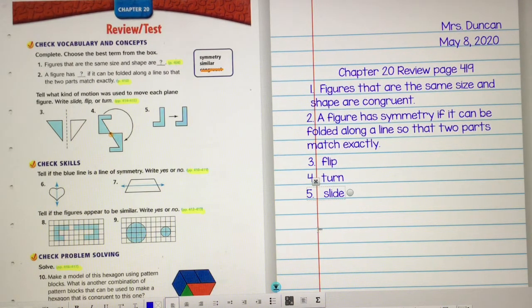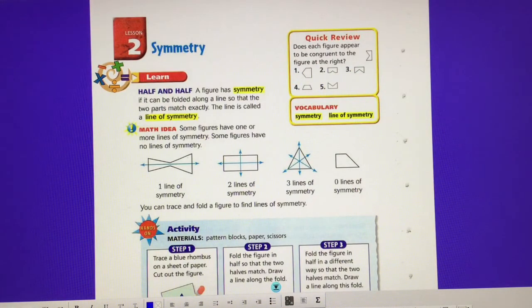Okay, then for six and seven, we're going to talk about if the blue line is a line of symmetry. We're going to write yes or no. So remember a line of symmetry, we're going to go back to page 410. Line of symmetry is where it can be folded along a line so that the two parts match exactly. So here on this first shape, it has one line of symmetry, right? I can fold it horizontally and it's going to match. Where this rectangle has two ways, I can fold it horizontally and vertically, right? Oh, this triangle has three lines, but this shape I can't fold it anywhere and it's going to match.